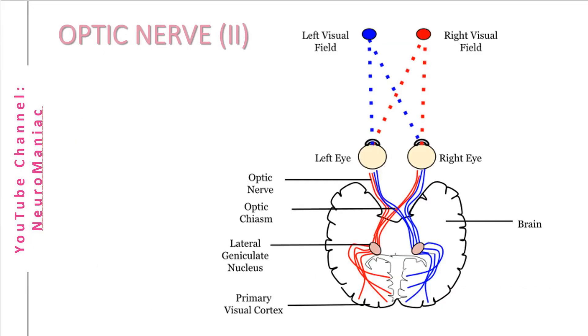The optic nerve is sensory. Therefore, when light stimuli hit the eye's photoreceptors — i.e. cones and rods — the optic nerve conveys this information to the brain for the formation of vision.